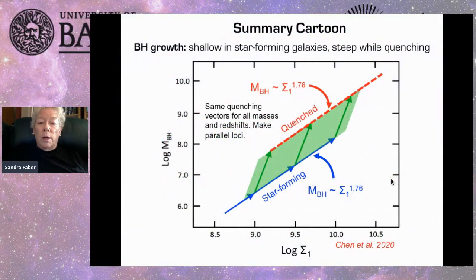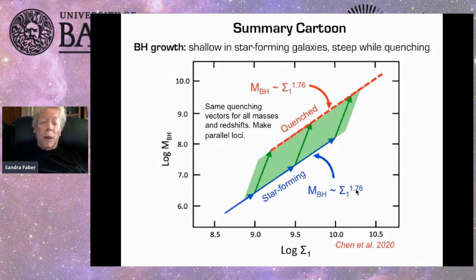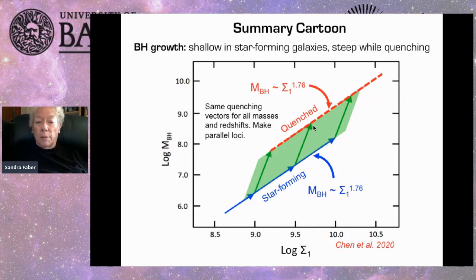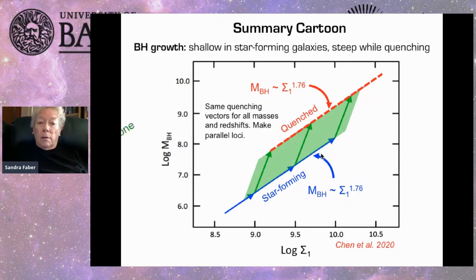Here is a summary cartoon of what black hole growth might look like as a function of central sigma-1. During the star-forming phase, black hole mass grows as a power of sigma-1 — this power is adjustable, not necessarily exactly 1.76. Assuming a more rapid black hole growth phase during quenching, and assuming that phase has the same slope and same length for all galaxies as they quench, you wind up with two parallel relations: a quenched ridge line and a star-forming ridge line. This green area would be the entry to the Green Valley — the so-called quenching zone.